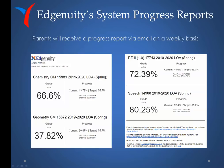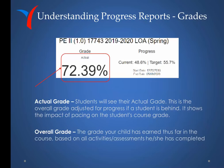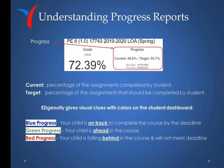Parents will receive a progress report through email on a weekly basis. On progress reports, students will see their actual grade — the overall grade adjusted for progress if a student is behind — showing the impact of pacing on the course grade. The overall grade is the grade earned thus far in the course based on all activities and assessments completed. Progress shows the current percentage of assignments completed by the student, while the target is the percentage that should have been completed.